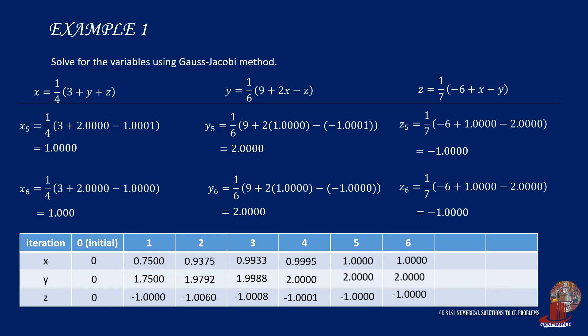Now, the values can be concluded as x is equal to 1, y is equal to 2, and z equal to negative 1. You can see the difference that as early as the fourth iteration, the values have already stabilized, so Gauss-Seidel is a shorter method of iteration.